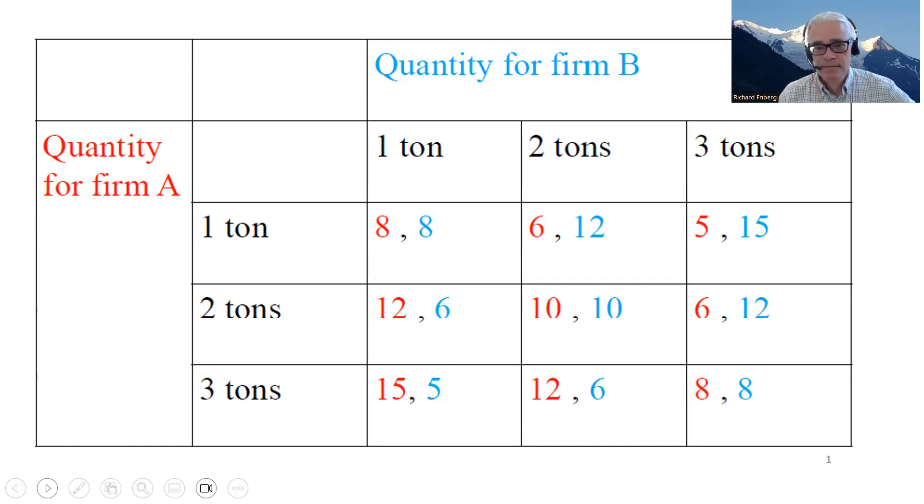So here it's a standard game. We can think there are two players, firm A and firm B. They each have a set of strategies, choose one, two, or three tons for each of them. And there are payoffs, profits, that depend both on what the player is choosing herself and on what the other player is choosing.